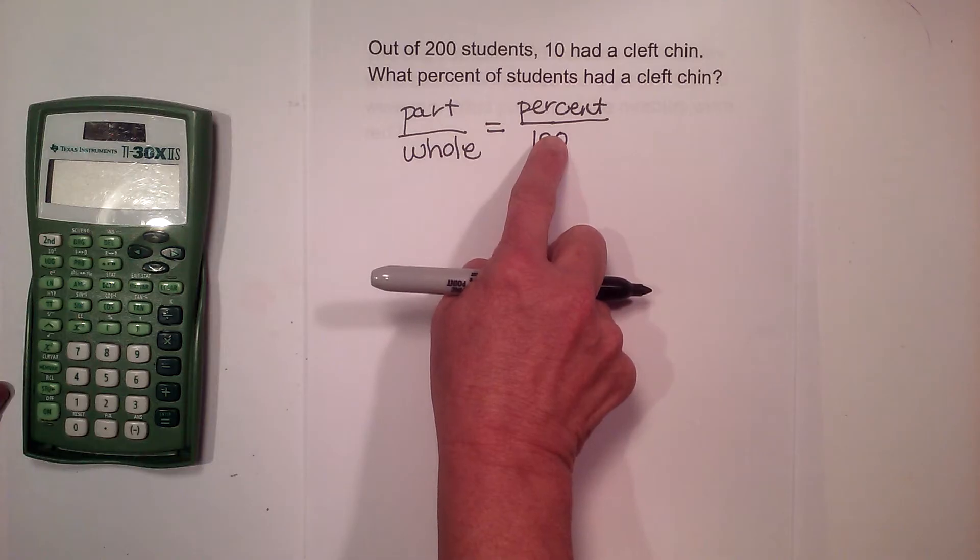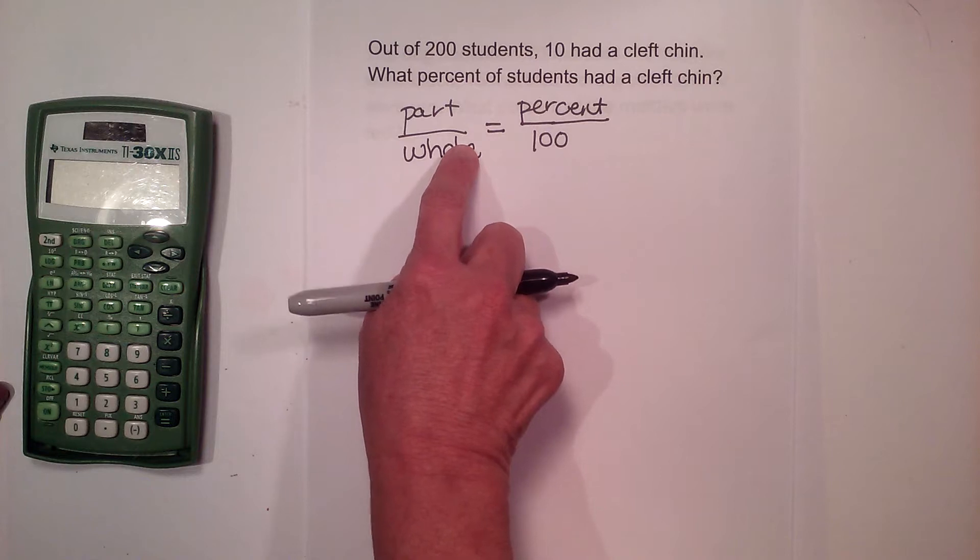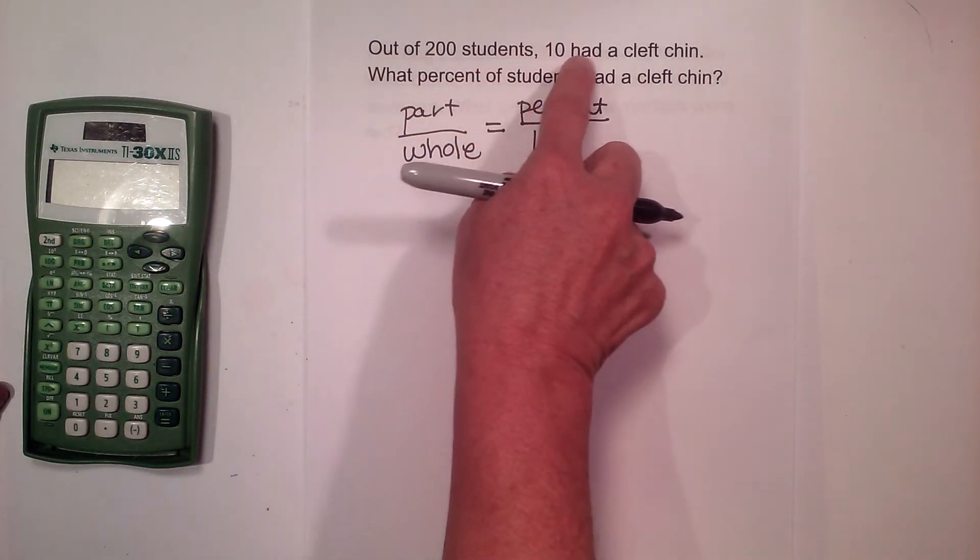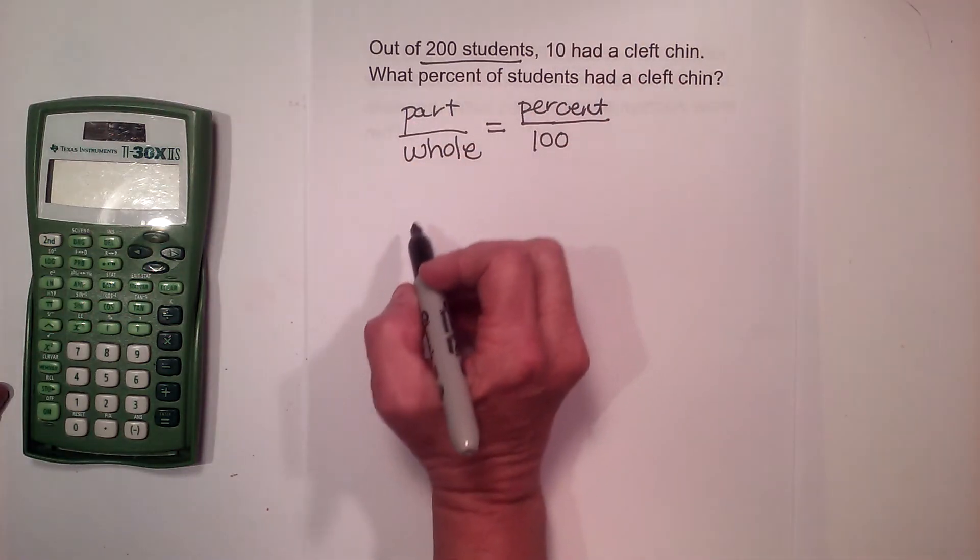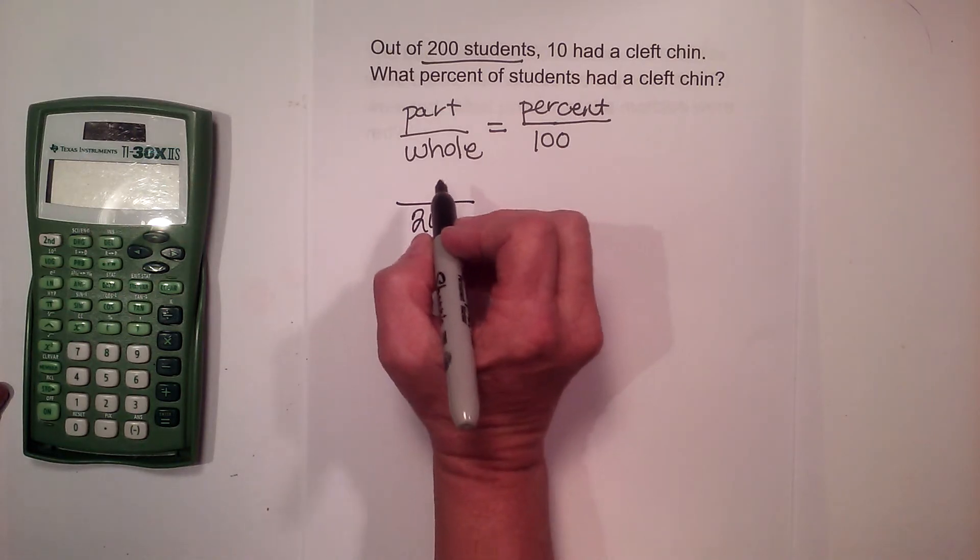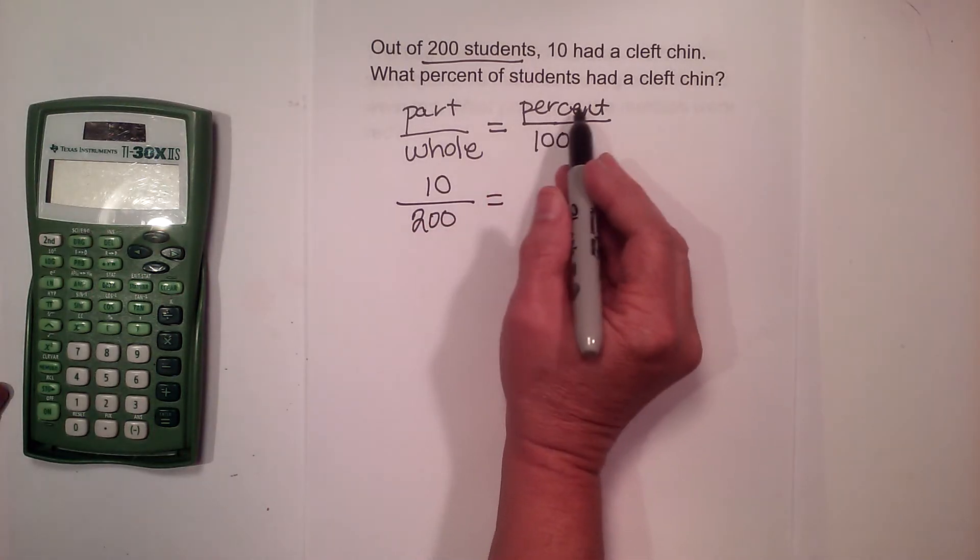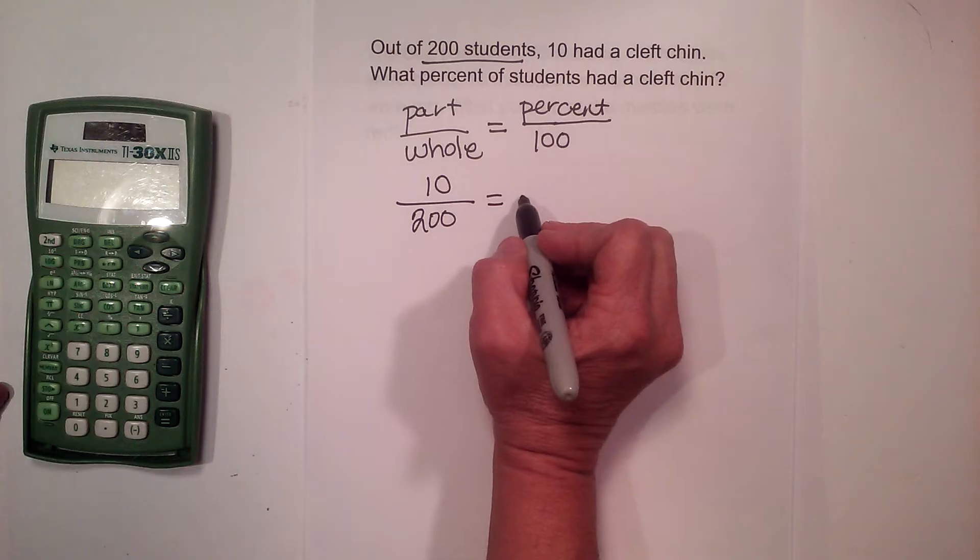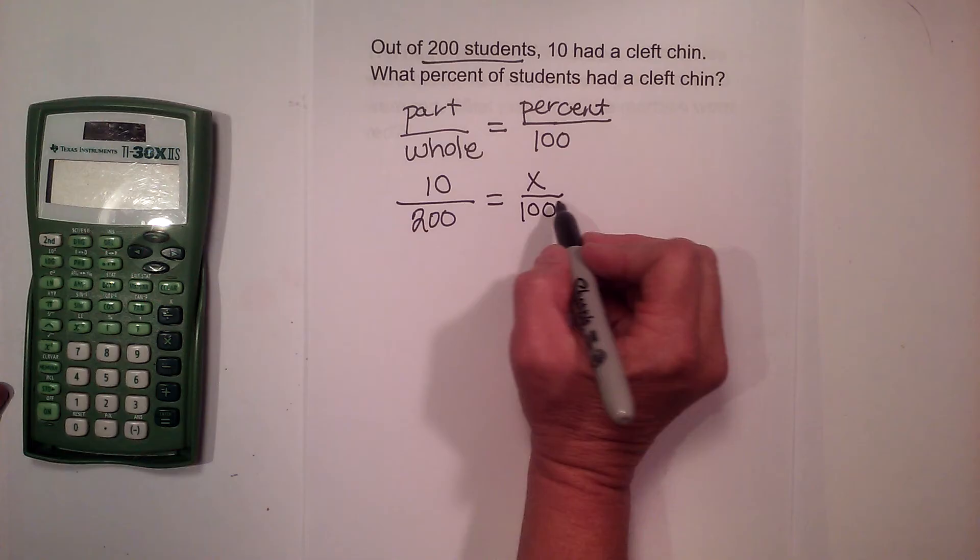So let's go back and see if we can figure out our part and our whole from the word problem. Out of 200 students, 10 had a cleft chin. So our total is 200, that's the whole group of students. 10 is the part. So that's going to equal our percentage. We don't know our percent, so we're going to call that x. And then of course we have out of 100 because the percent is always out of per 100.